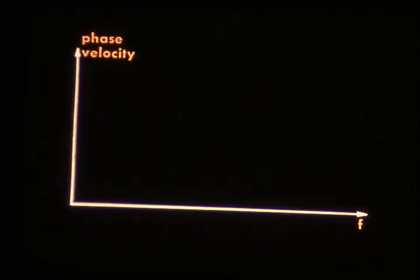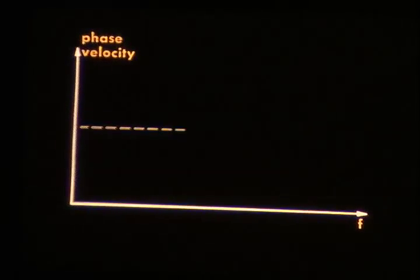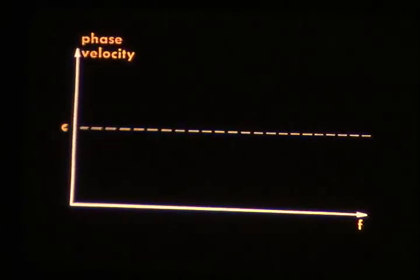By the way, we can now begin to draw a qualitative graph of the phase velocity of light in optical materials as a function of frequency. In vacuo, it has the same value for all frequencies. We call it C.